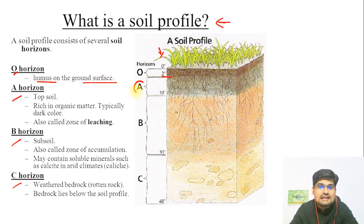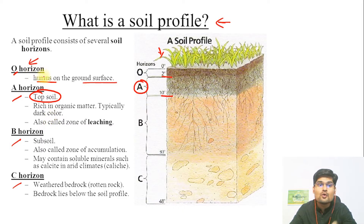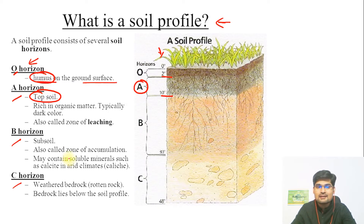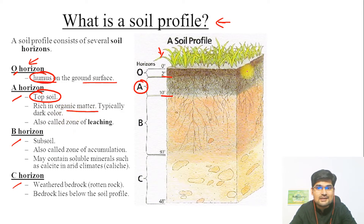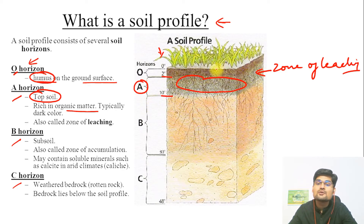Horizon A ranges up to 10 feet and is also called topsoil. So if you are confused that O horizon is topsoil, remember horizon A is topsoil, not O. O is only containing the humus part — the dead decayed remains of plants and animals. Horizon A is also rich in organic matter and typically darker in color, as seen in the diagram. Remember this is also called the zone of leaching, where the soil loses its nutrients — all nutrients present in this layer are lost due to various processes and deposited further down.